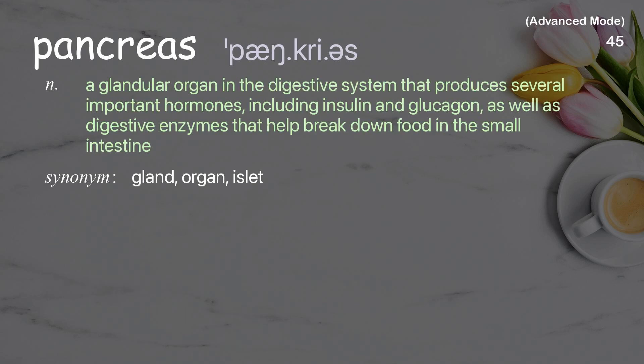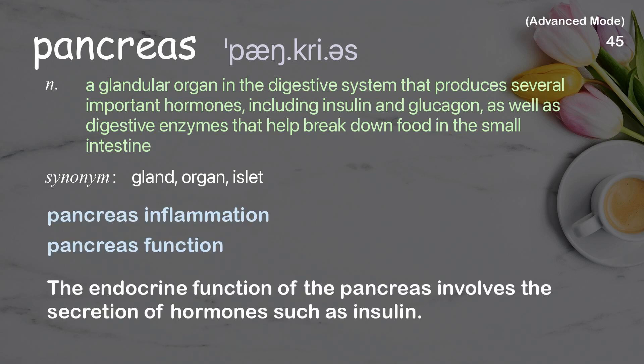Pancreas: a glandular organ in the digestive system that produces several important hormones including insulin and glucagon, as well as digestive enzymes that help break down food in the small intestine. Examples: pancreas inflammation, pancreas function. The endocrine function of the pancreas involves the secretion of hormones such as insulin.